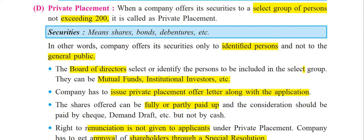In other words, the company offers its securities only to identified persons and not to the general public. The company does not give the offer to the general public. Now, who is the authority that selects or identifies the persons? It is the Board of Directors. They identify and select them. That group can include Mutual Funds and Institutional Investors.